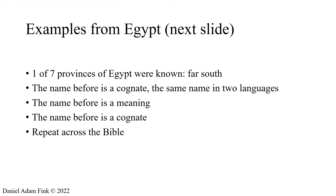Egypt and the entire rest of the Bible can be found using the same system, and it is the same level of simplicity. I follow the KISS principle. Anytime an explanation takes too many words and becomes convoluted, it no longer passes the smell test and is trying too hard. Anytime the answer is correct, it's easy. One of seven provinces of Egypt had been known so far — only the far south — so we work from that province.